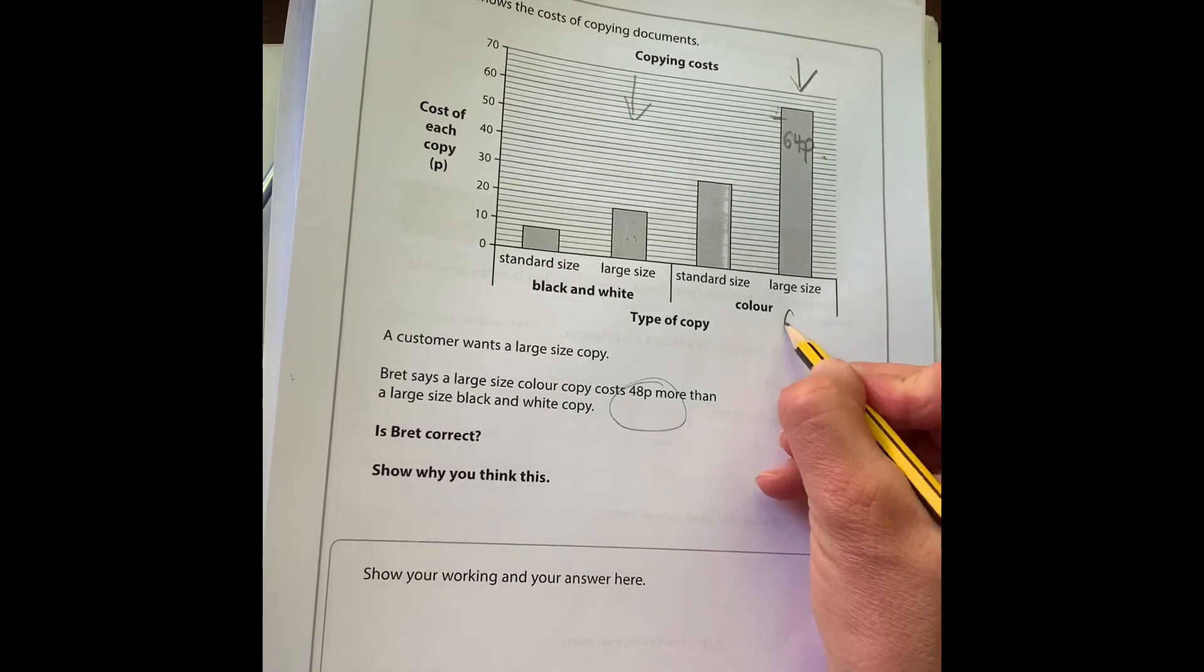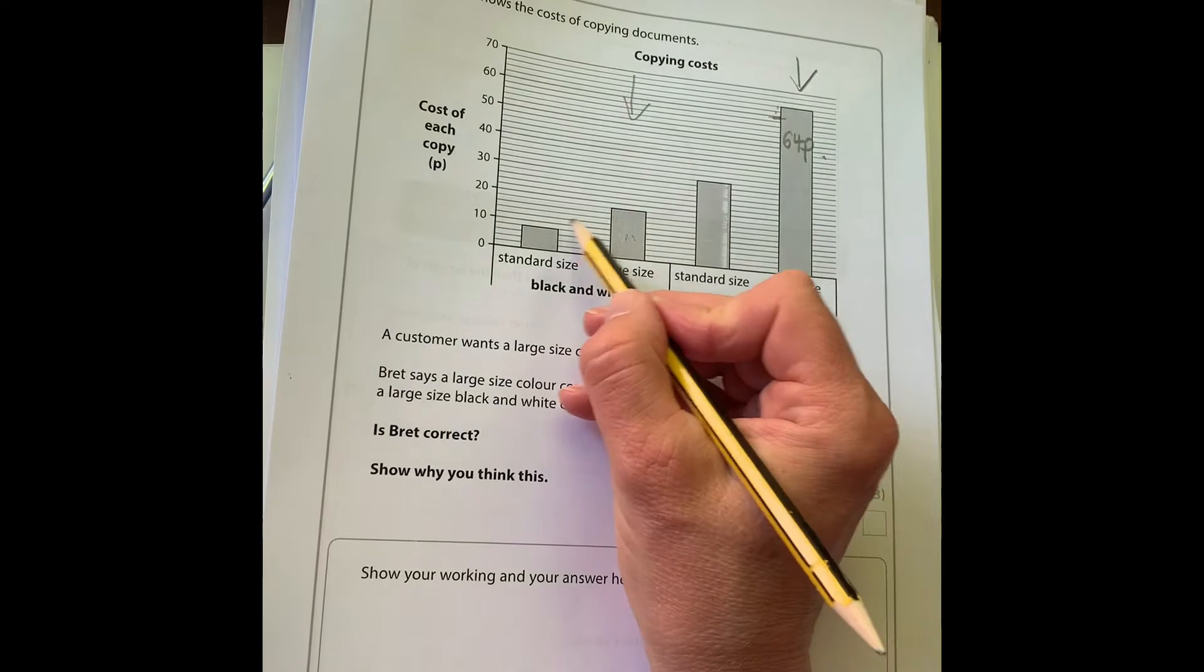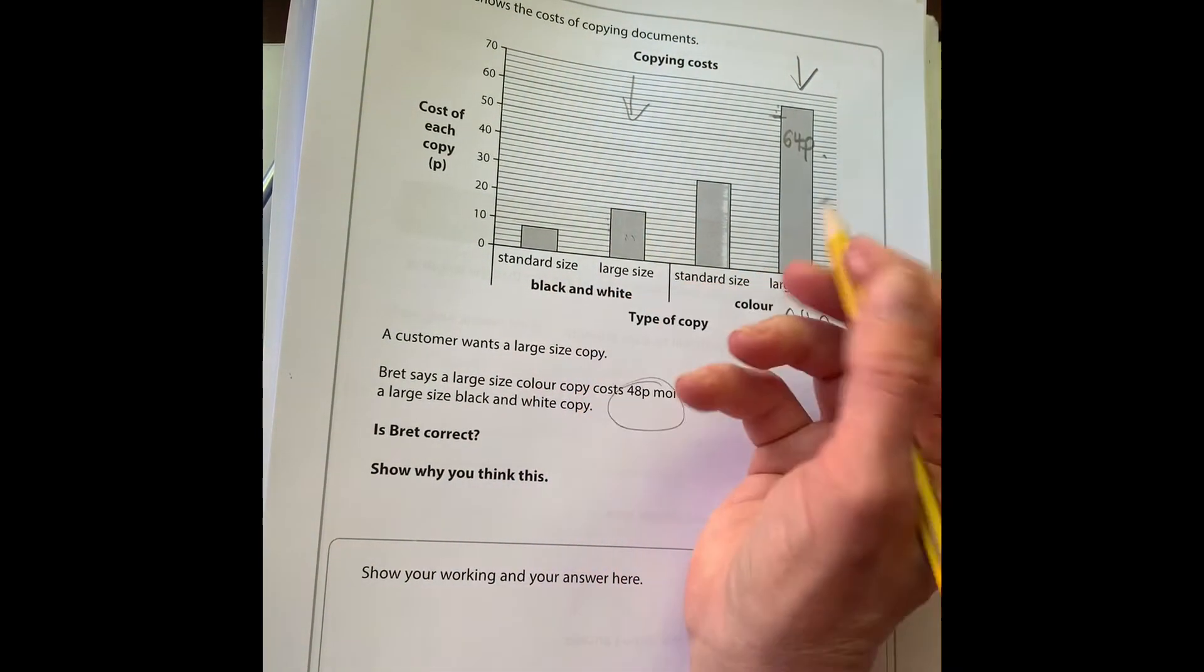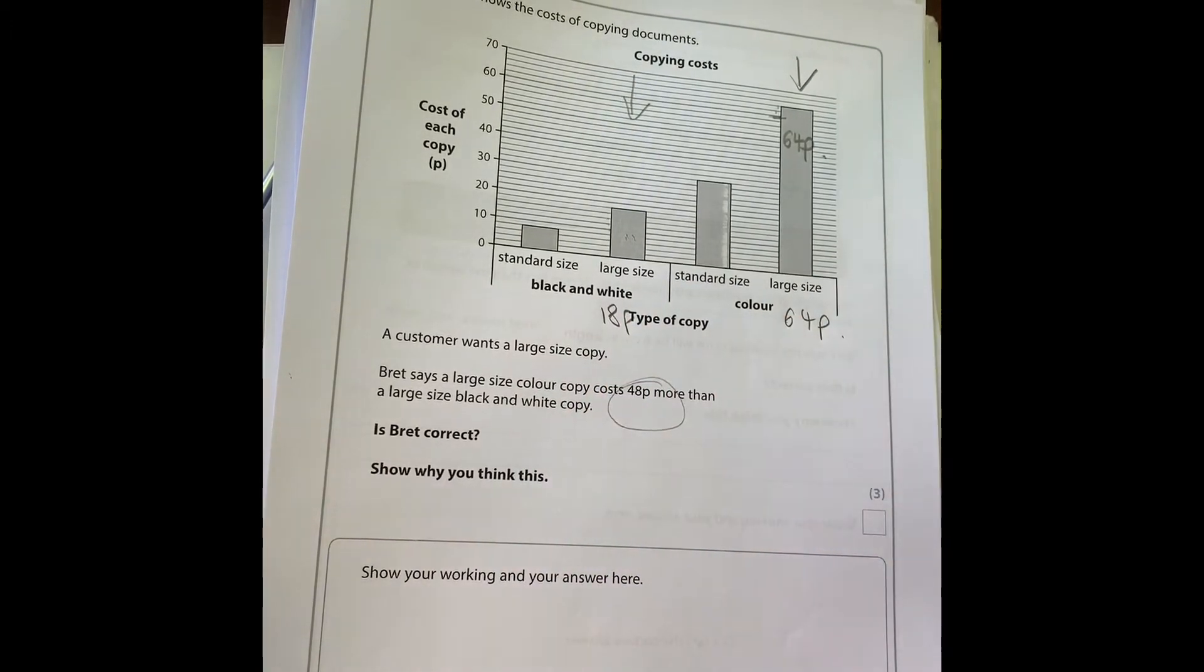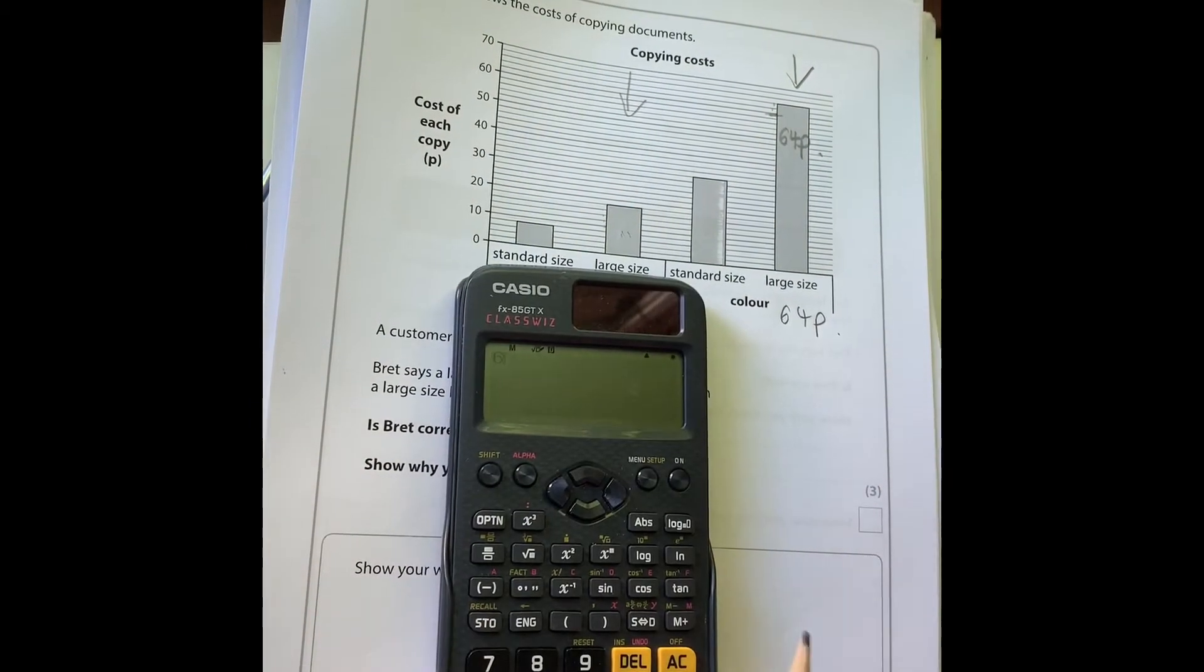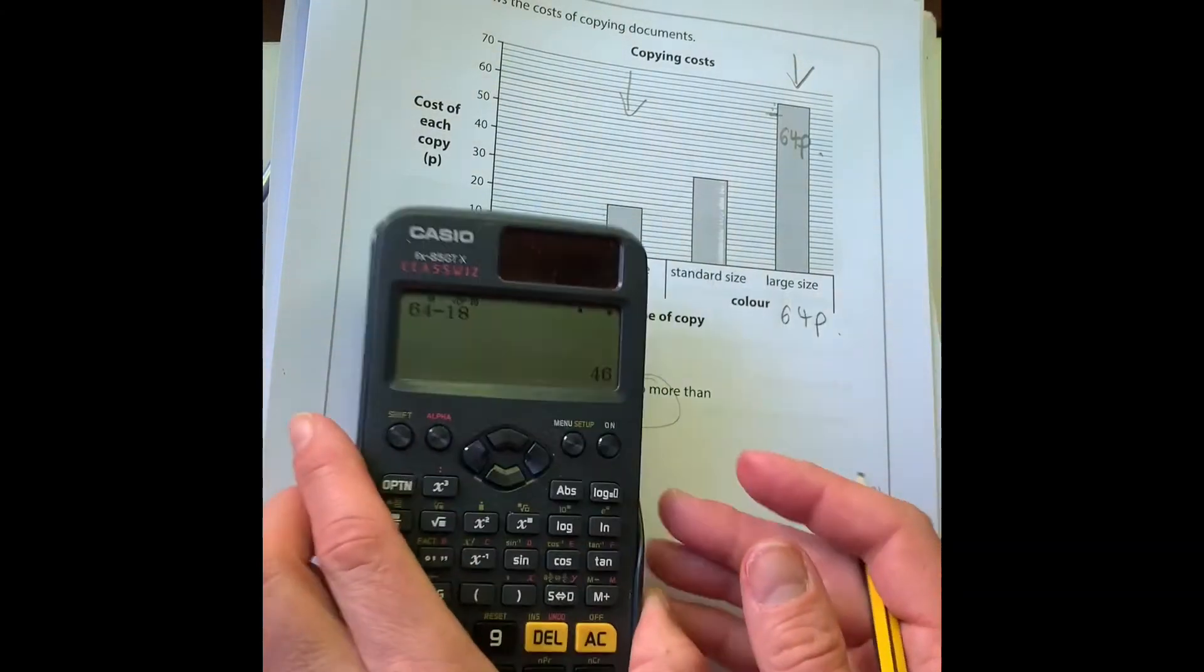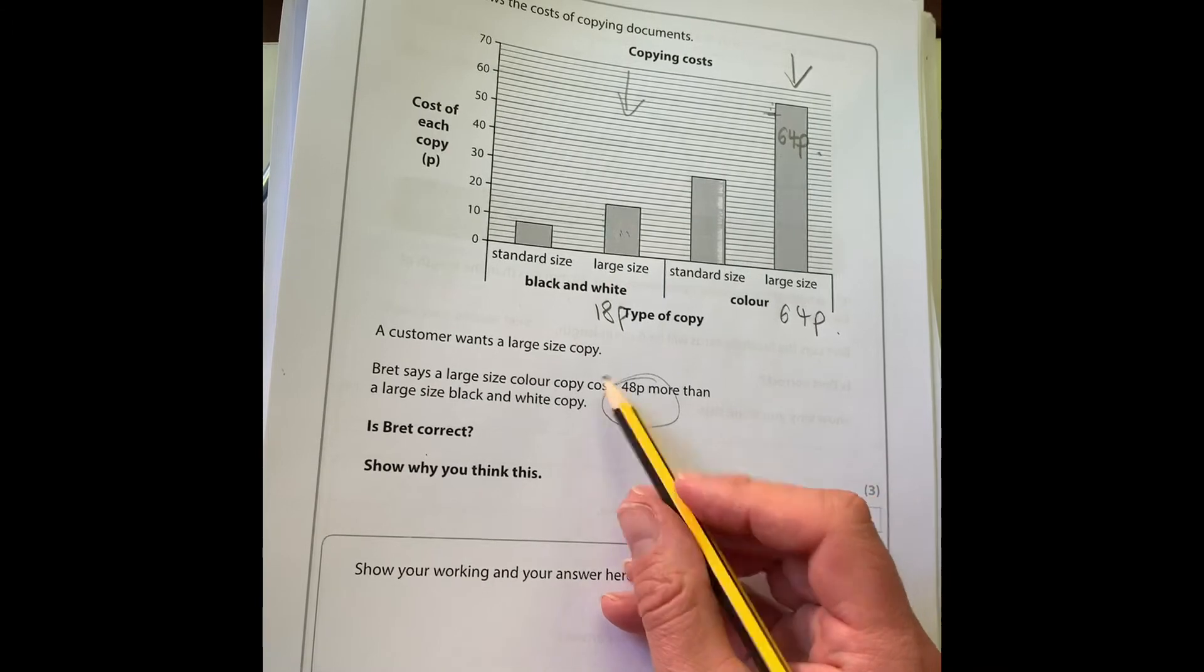And the cost of this one is 10, 12, 14, 16, 18p. So that's 18p. We want to work out the difference between 64 and 18. So again, as it's a calculator paper, might as well use my calculator. 64 take away 18 is 46p.